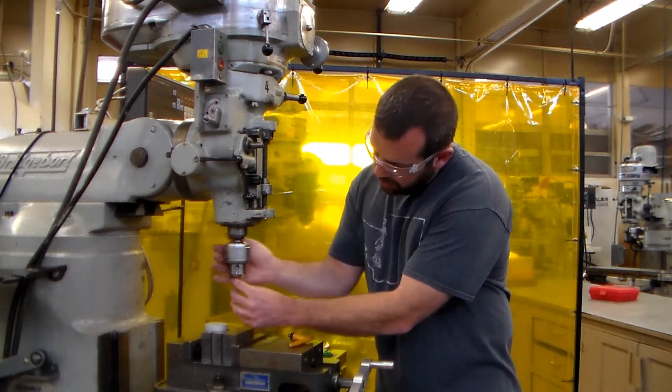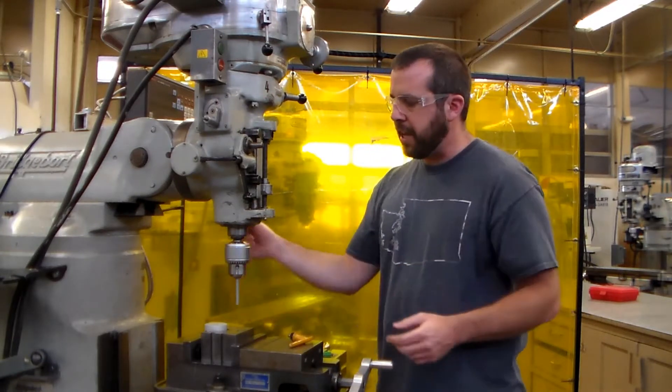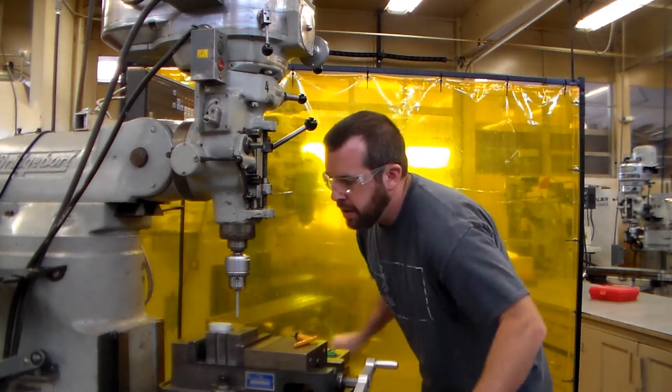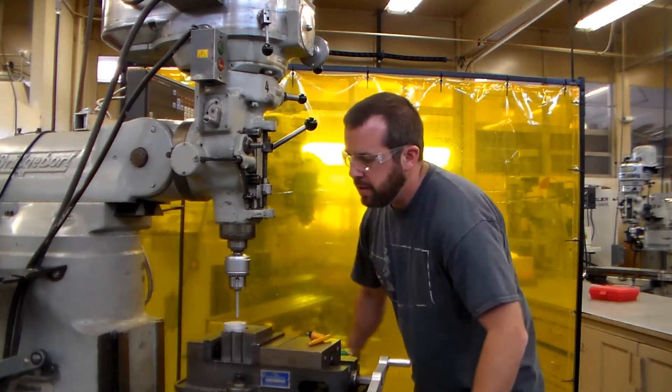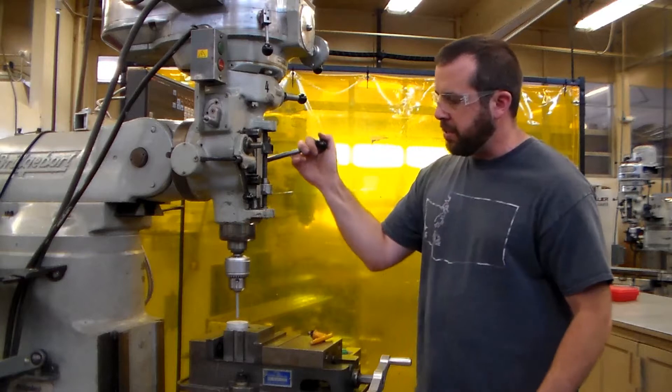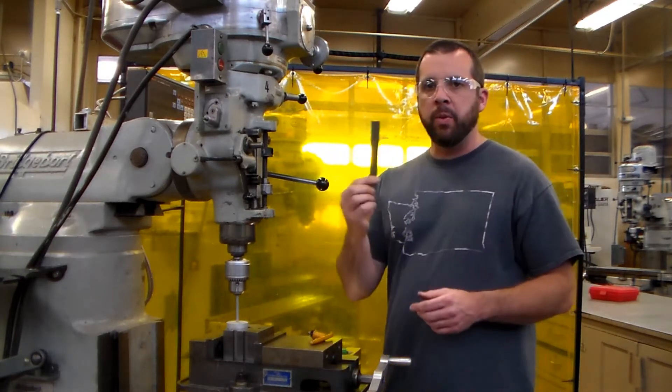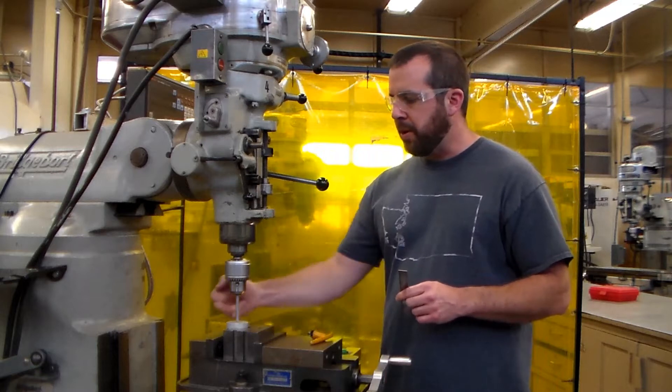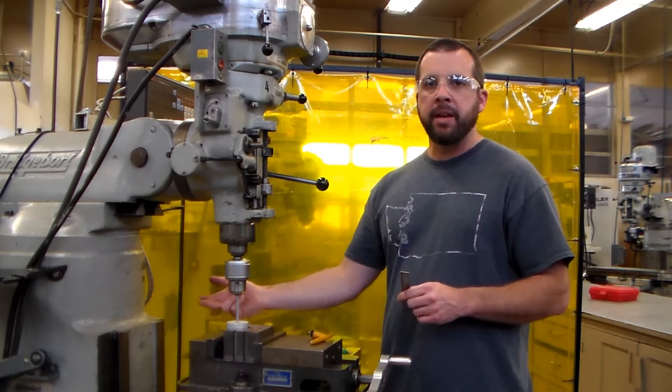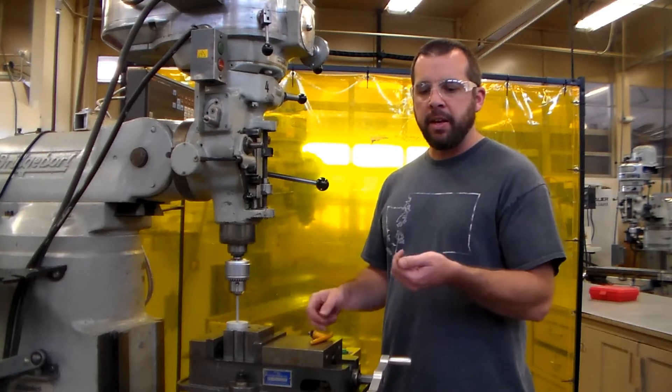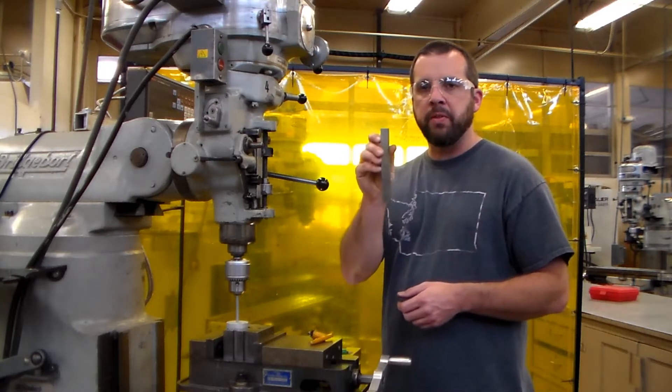So the first thing I can do is just lightly hold it in the drill chuck. Then I can position it to where it looks like it's close to the center of the part. Then I'm going to take a ruler and take some comparative measurements from side to side, front to back, and then I'm going to move the X and Y axis until I'm getting a near perfect reading with my ruler.